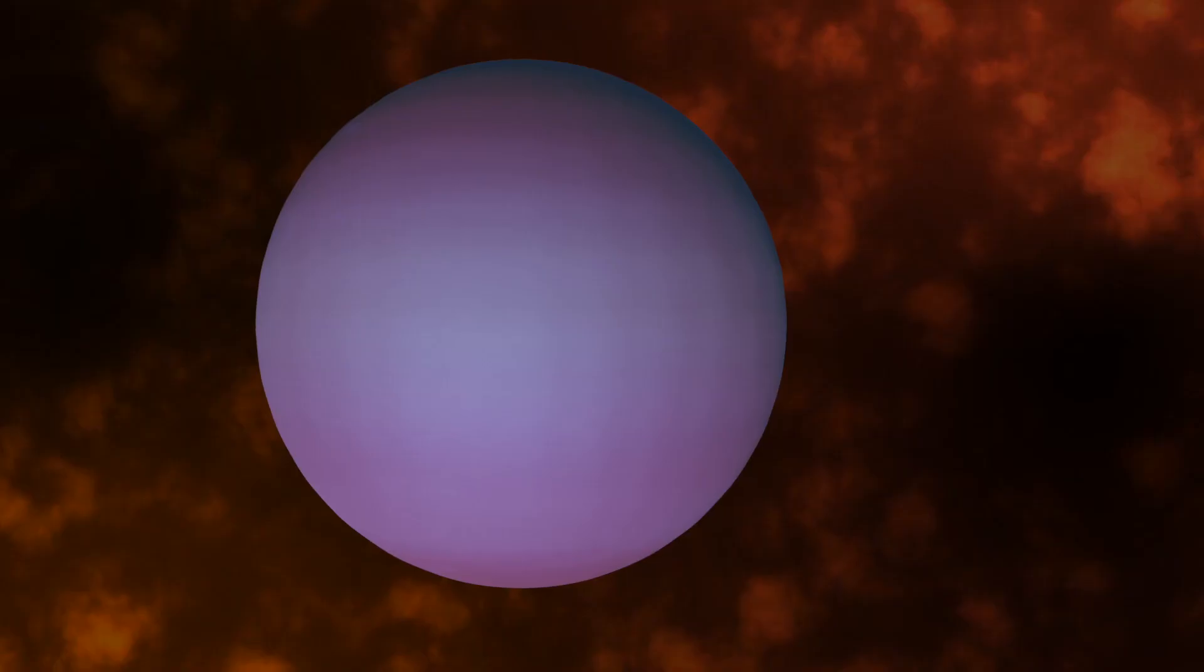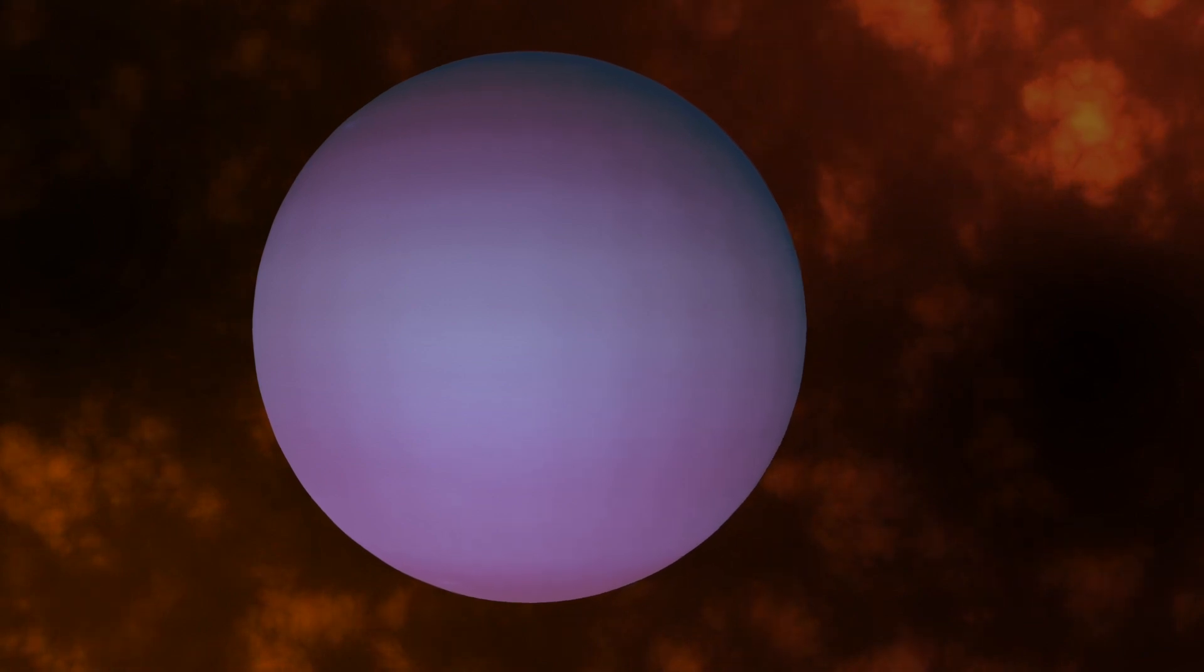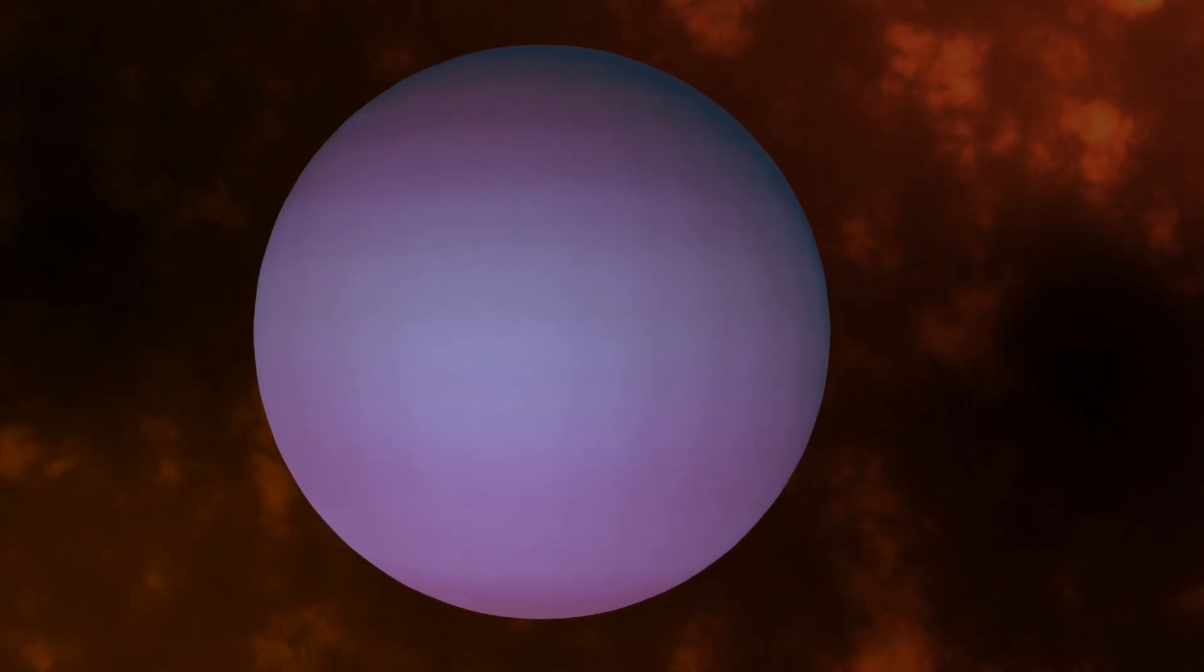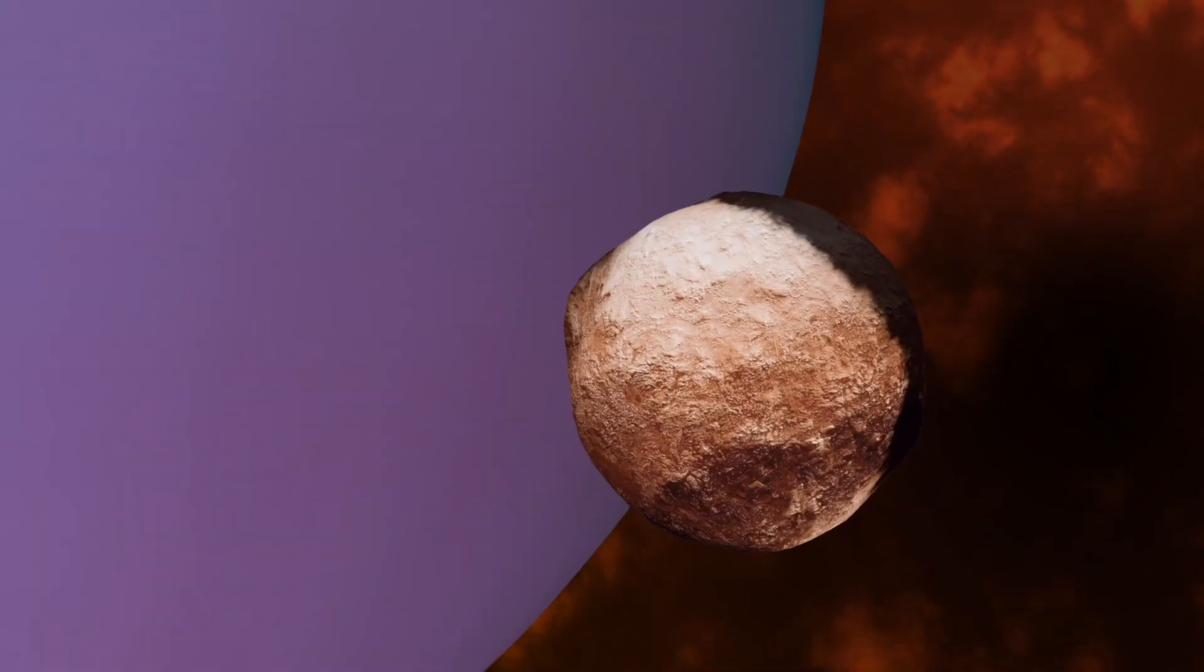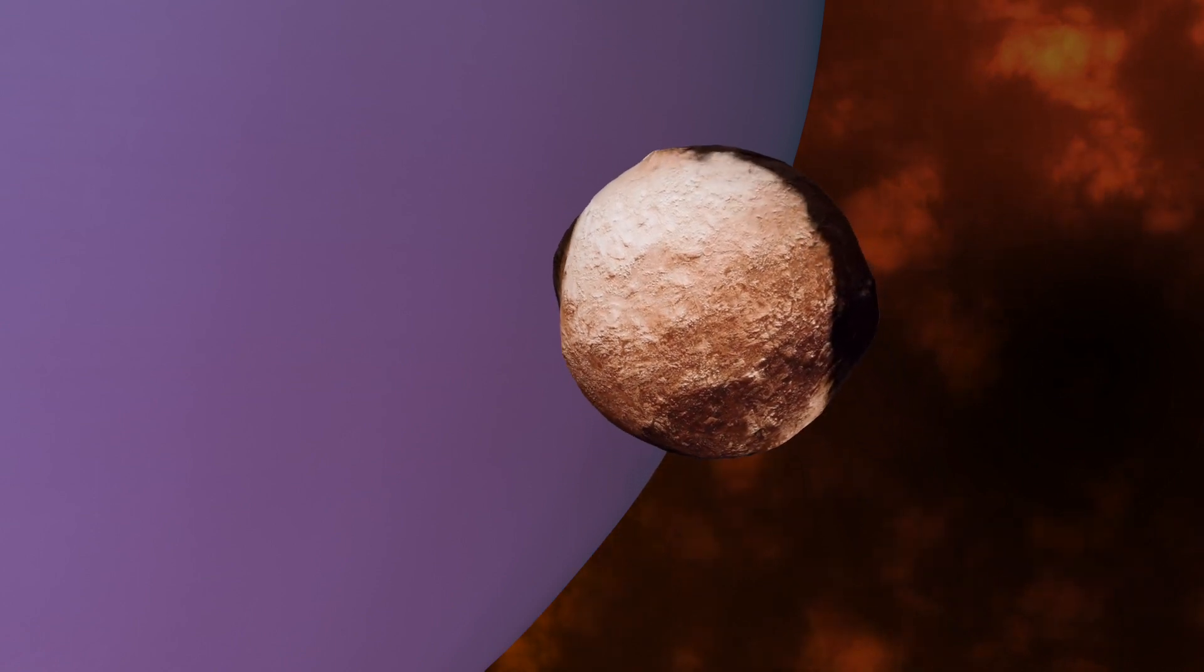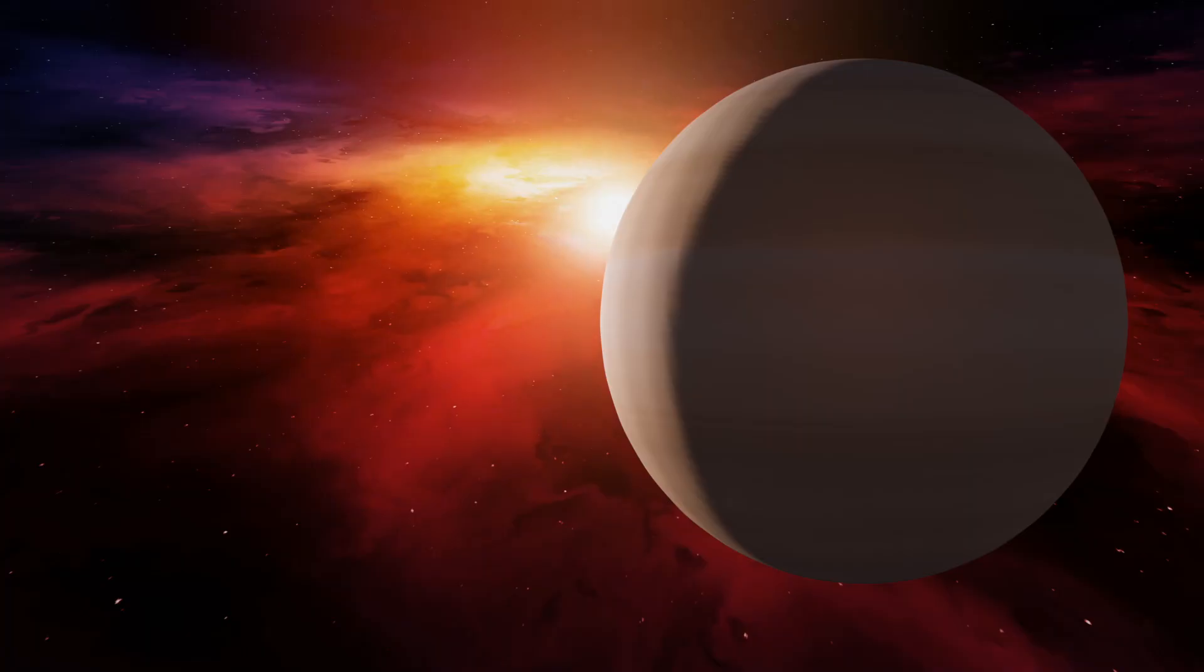It continued to clump into balls, forming bodies of rock, ice, gas, or a combination of the three. Small bodies collided to create larger bodies, and larger bodies could collect all the matter nearby, clearing a path through the disk. These were the first planets of our solar system.